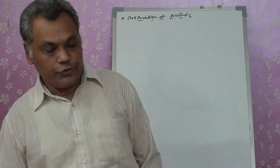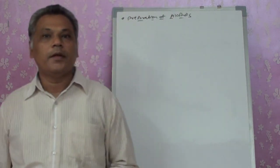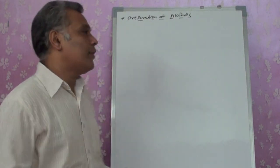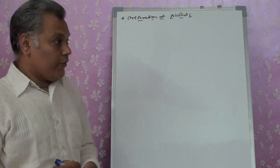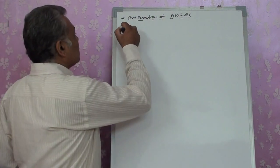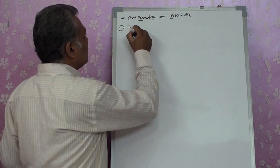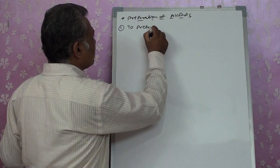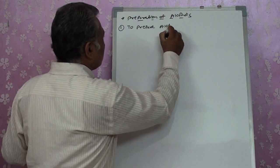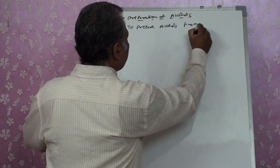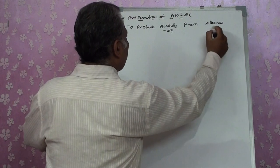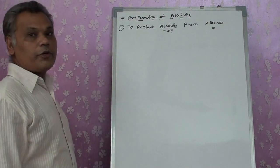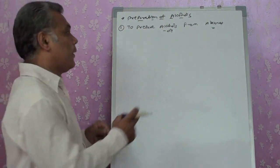Good morning students, welcome to the virtual classroom. We are studying alcohols, phenols, and ethers today. In this lecture we are going to study the preparation of alcohols. The first method is to prepare alcohols from alkenes, that means we are going to convert the double bond into an OH group.